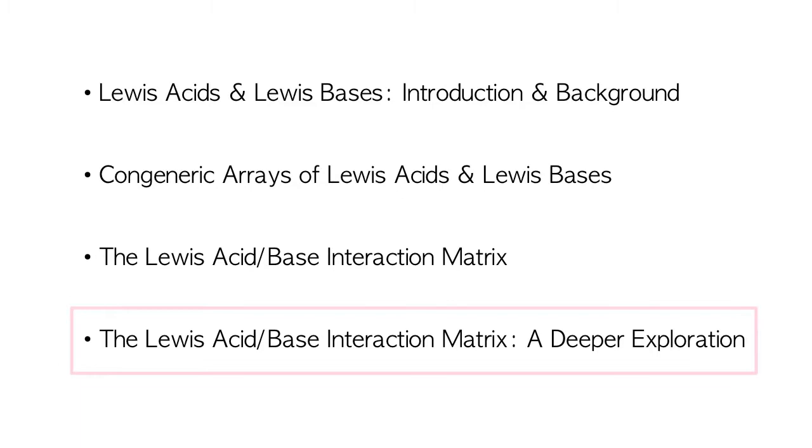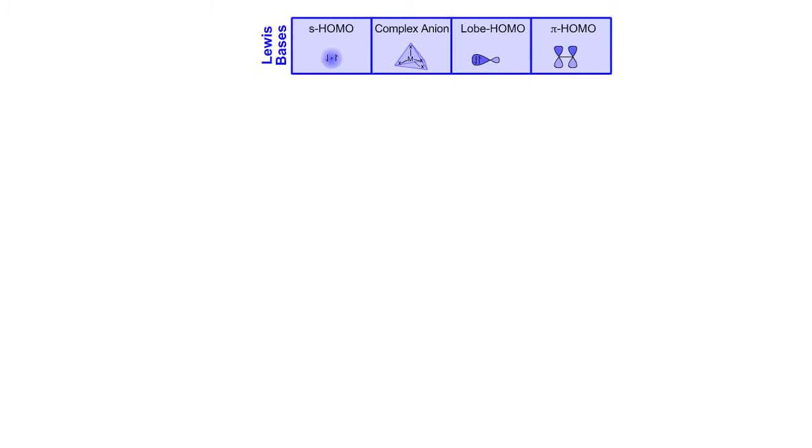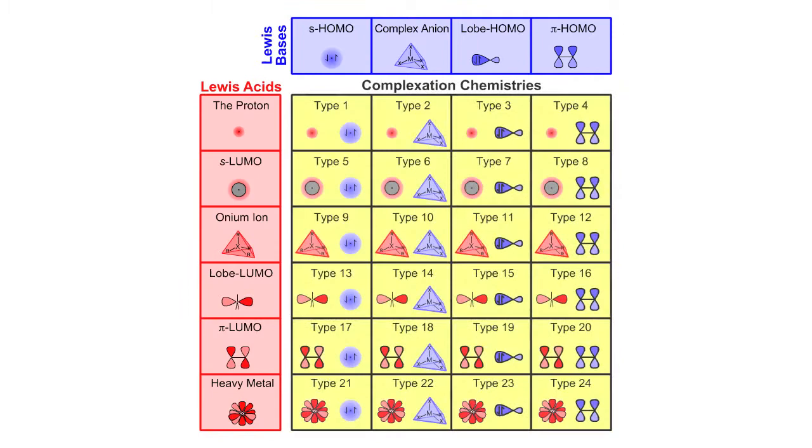In this fourth video we're going to explore the Lewis acid-base interaction matrix one cell at a time. Quick reminder: there are four types of Lewis base, six types of Lewis acid. These interact to give 24 types of Lewis acid-base complexation chemistry.